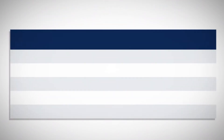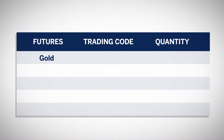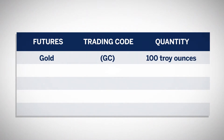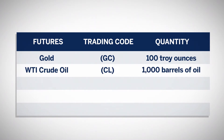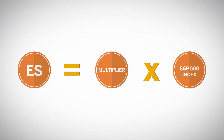For example, a single COMEX Gold Contract Unit, trading code GC, is 100 troy ounces, which is measured by weight. A NYMEX WTI Crude Oil Contract Unit, trading code CL, is 1,000 barrels of oil measured by volume. The E-mini S&P 500 Contract Unit, trading code ES, is a financial calculation based on a fixed multiplier times the S&P 500 index.